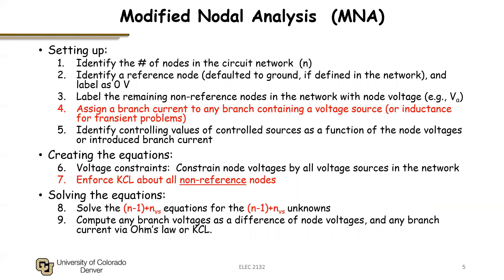So we eliminate the need to have a supernode. The cost of that is I have some additional unknowns. Now the number of equations I need is n minus 1, or the number of non-reference nodes plus the number of voltage sources in the network.